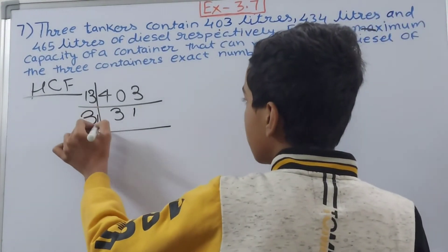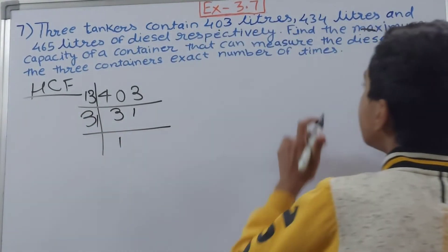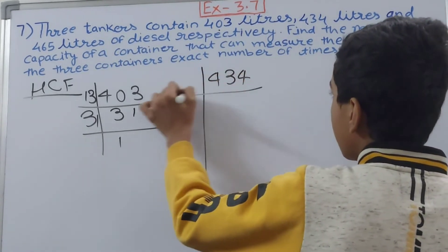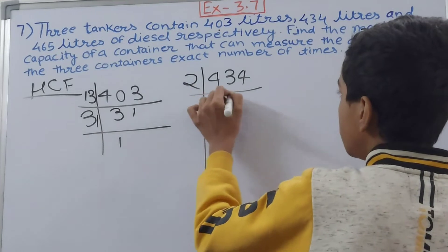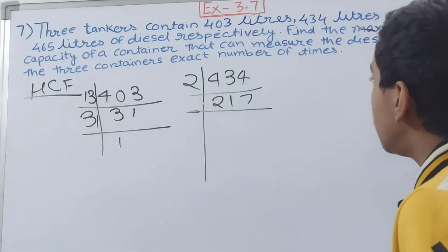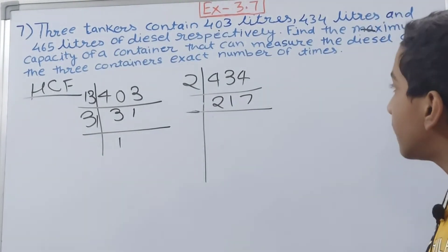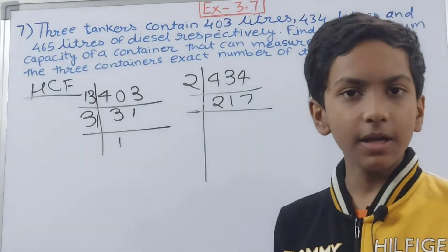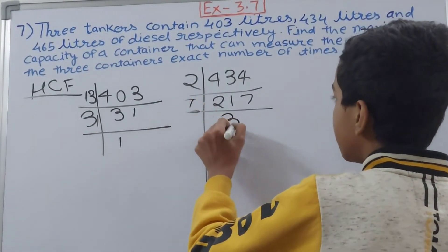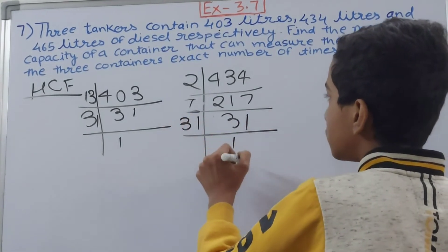Now we will see for the next one, this is 434. This will go by 2, 2 times 1 and 7, 217. Now 217, will it go by 2? No. Will it go by 3? Also not divisible by 3. Will it be divisible by 5? No. So 7, yes it will be divisible by 7, 31 times. Again we have got 31, so it is a prime number.